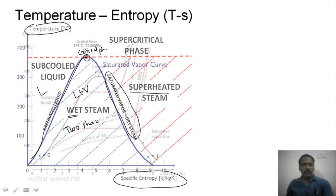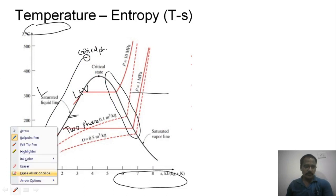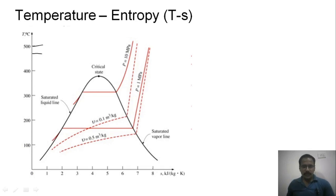Next we will talk about the different lines on the temperature-entropy diagram. The temperature lines are constant horizontal lines, and the entropy lines are vertical lines.